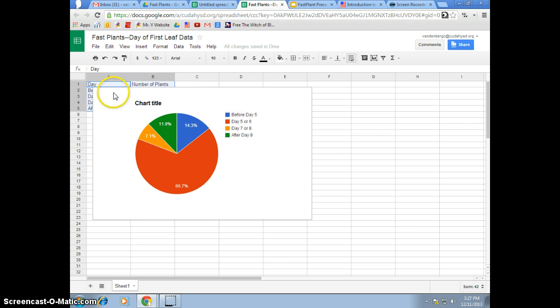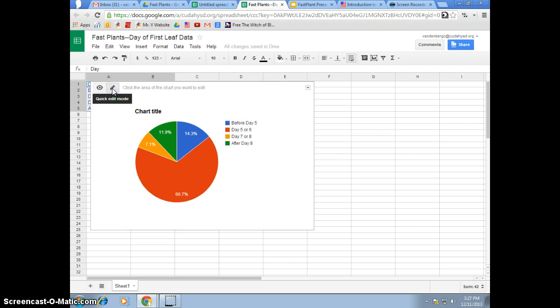Now that it has been inserted, I want to come back up here. I am going to click, and then I am going to hit quick edit mode here. Click on my chart title. This is going to be the date of the first leaf. Press enter to apply. I have entered it. It is now applied.